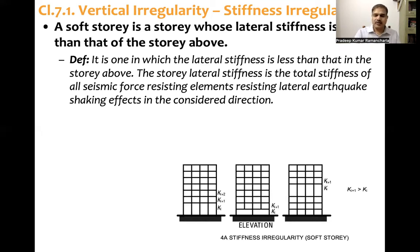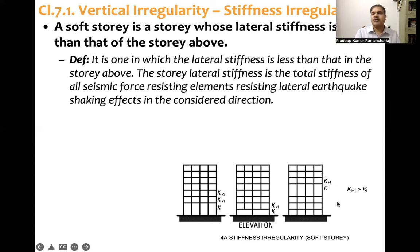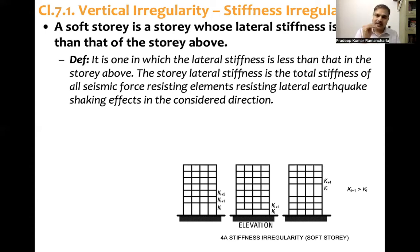In this example, ki and ki+1 are shown, where ki is greater than ki+1. This means the considered story ki has a stiffness less than the story above, so it qualifies as a soft story. According to this clause, any story whose stiffness is less than the story above is a soft story.